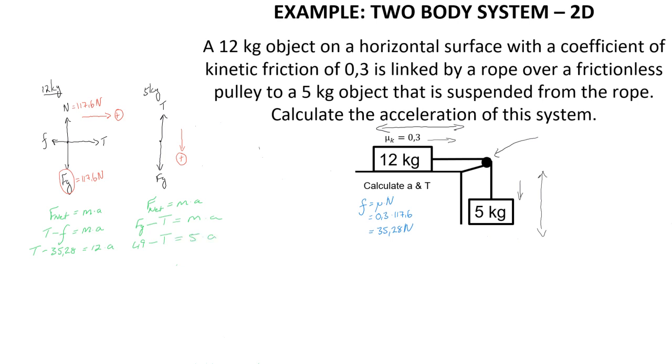We can then simplify each of these expressions. For this expression, T is equal to 12a plus 35.28. And for this expression, T is equal to 49 minus 5a.